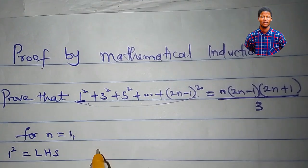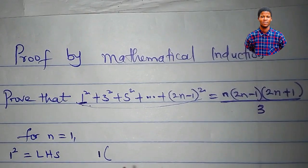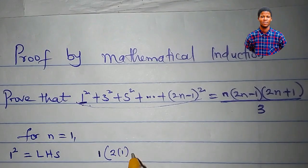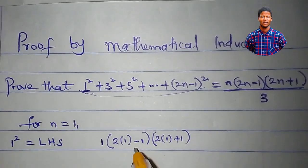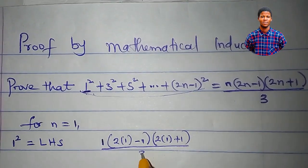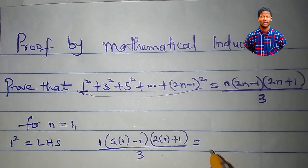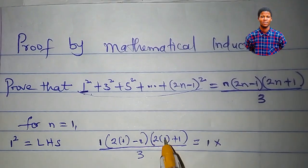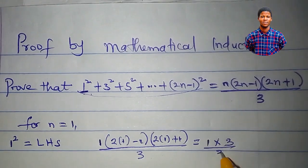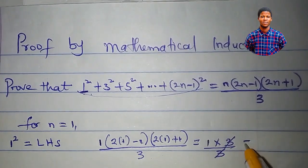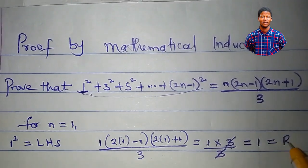At the right hand side, we have 1 times — anywhere I see n, I'll put 1 — times (2 times 1 minus 1) times (2 times 1 plus 1) all divided by 3. So: 2 times 1 is 2, 2 minus 1 is 1; 2 times 1 is 2, 2 plus 1 is 3; all over 3. The 3 cancels the 3. This is equal to 1.